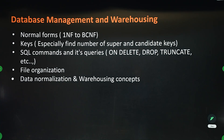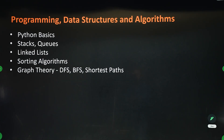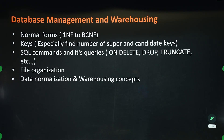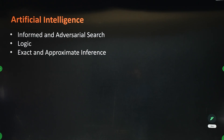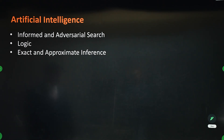Programming, Data Structures, and Algorithms are there in GATE CS also, so we are taking those topics as well. Database Management and Warehousing — Database Management is in GATE CS also. This is about Machine Learning, and this is about Artificial Intelligence. These are all the topics.